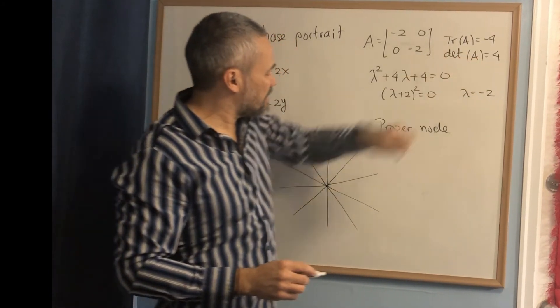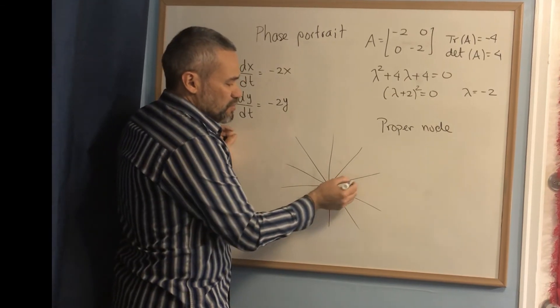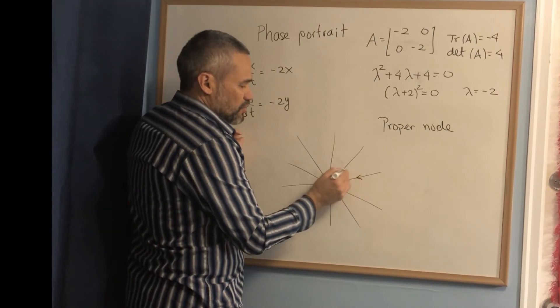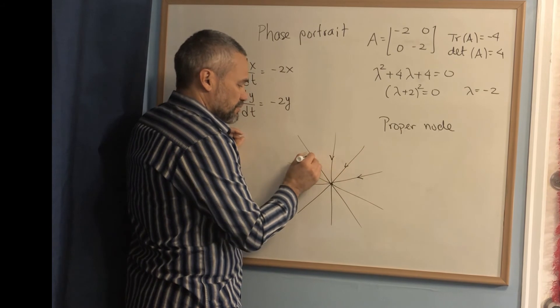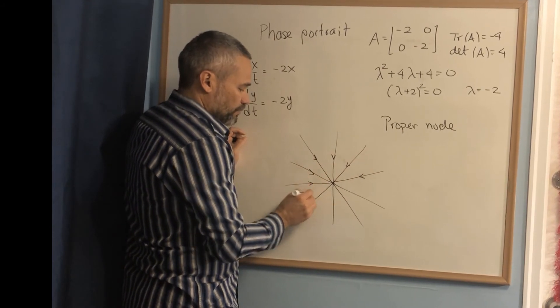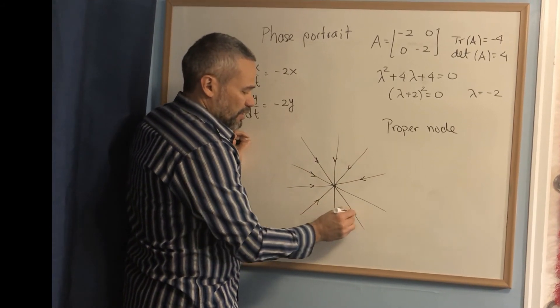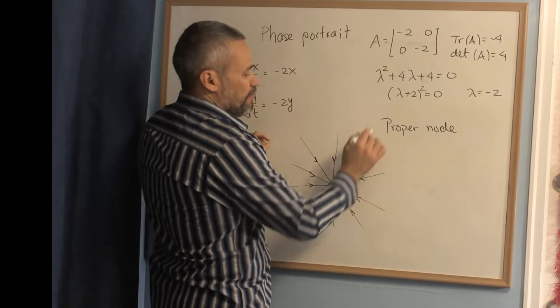And since lambda is negative, then all the arrows in this orbit, they go toward the origin. And this is an example of a proper node.